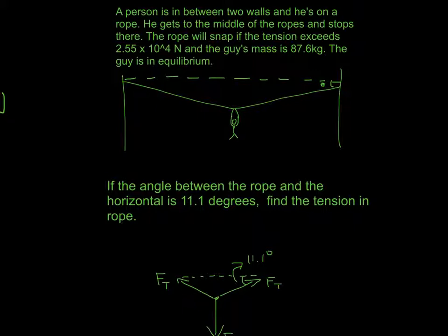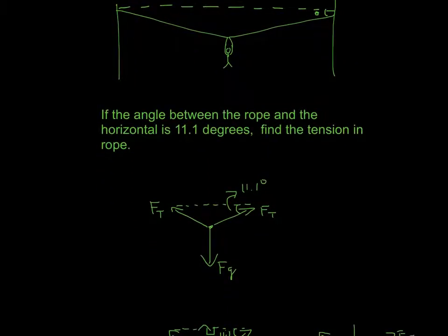So going back to the problem, what you can usually do is just draw a free body diagram. So I represented the guy as just a dot. And then you draw the forces acting on him. So gravity is going to be acting on him and then tension is going to be on either side. And then you have the angle right here, 11.1.